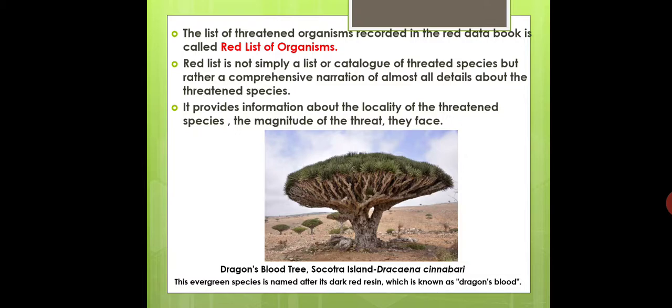Here we can see one interesting example of such a threatened species — that is the Dragon Blood Tree. It is found in Socotra Island and its scientific name is Dracaena cinnabari.